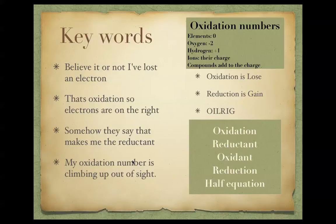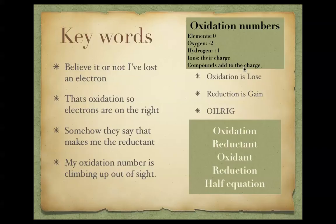The last part of the song — 'my Oxidation number is climbing up out of sight' — refers to the rules for assigning Oxidation numbers. The general rules are: elements have an Oxidation number of 0; Oxygen has an Oxidation number of -2; Hydrogen is always +1; ions have the charge they carry; and in compounds, the Oxidation numbers must add up to the overall charge.